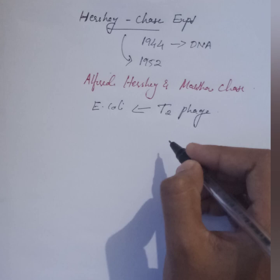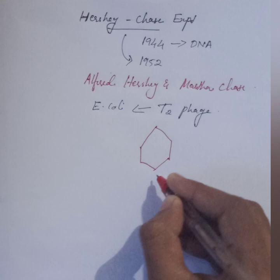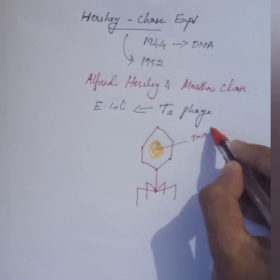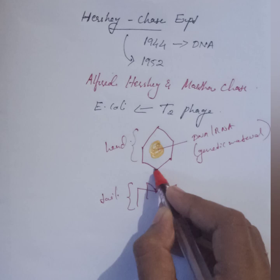Before going to the experiment, let us see the general structure of a bacteriophage. In the structure of a bacteriophage, the genetic material which is DNA is contained in the capsid head, and all other parts like head, collar, tail, and sheath are made up of proteins. The selection of bacteriophage is apt to the situation — to prove whether DNA or protein is the genetic material.